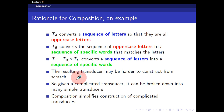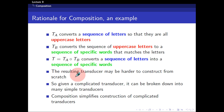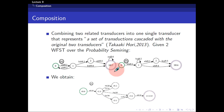The resulting transducer may be very hard to construct from scratch. So what you do is break it up into many simpler transducers and then compose all of them together. Hopefully your final product will be able to achieve what you want. Composition actually simplifies the construction of a very complicated transducer. A more formal introduction can be found in Hori's book: composition is combining two related transducers into a single transducer that represents a set of transductions cascaded with the original two transducers.